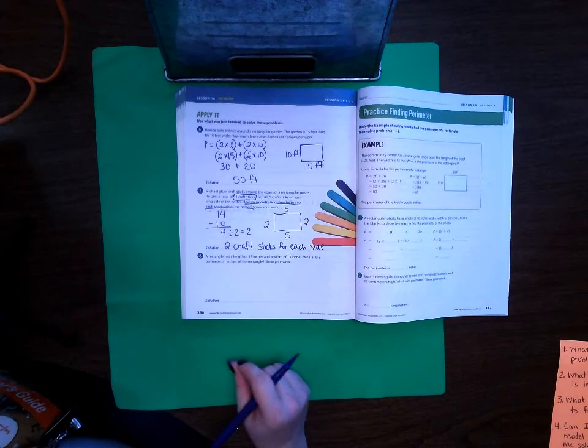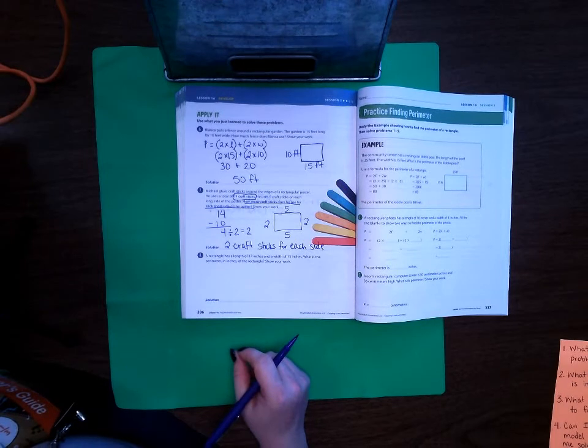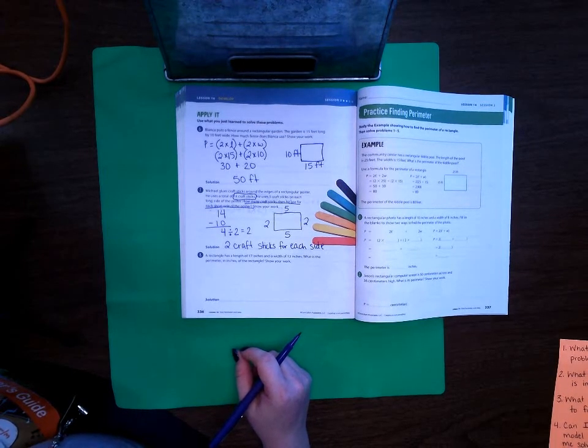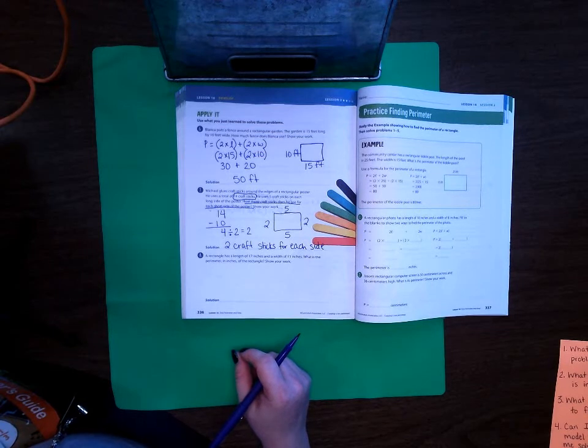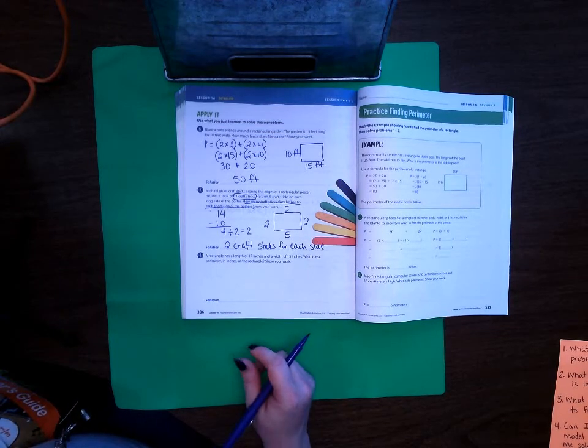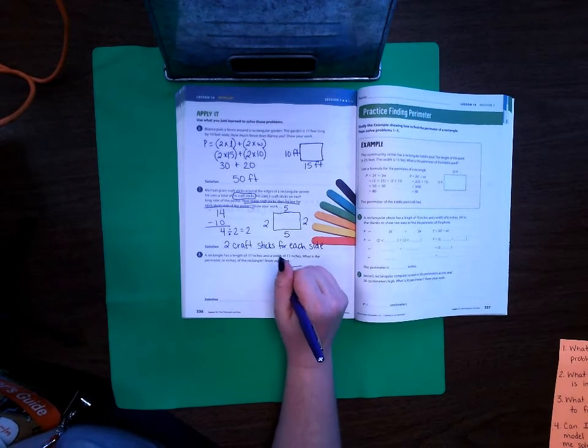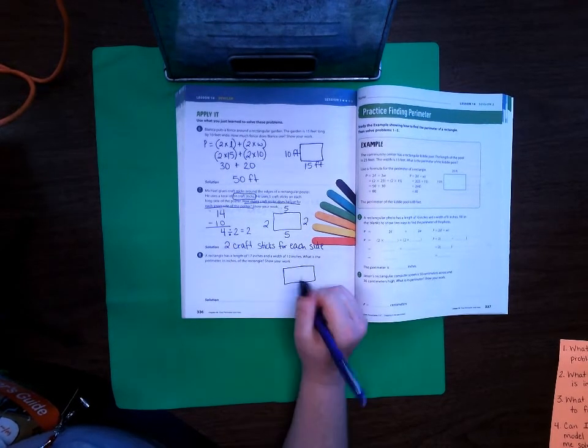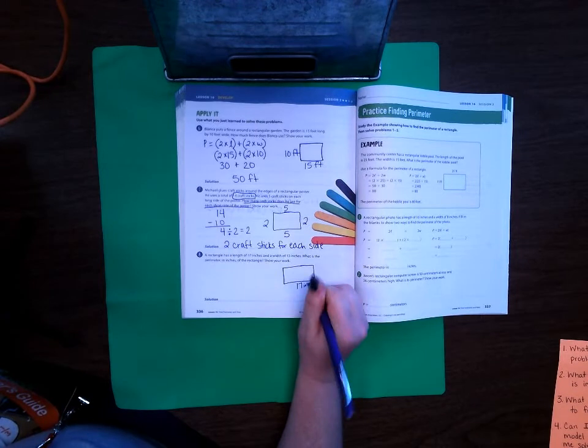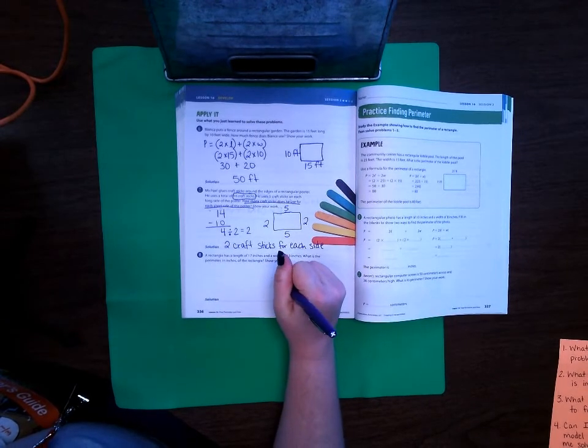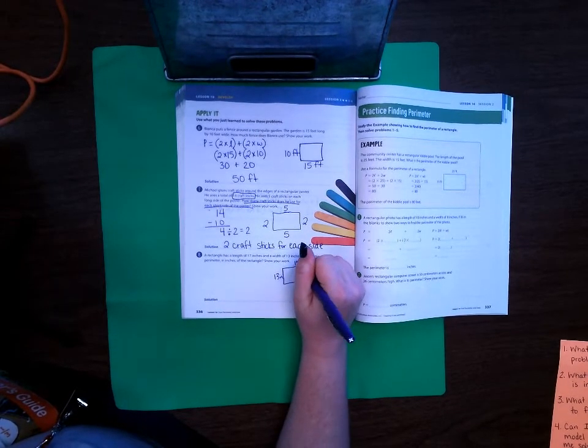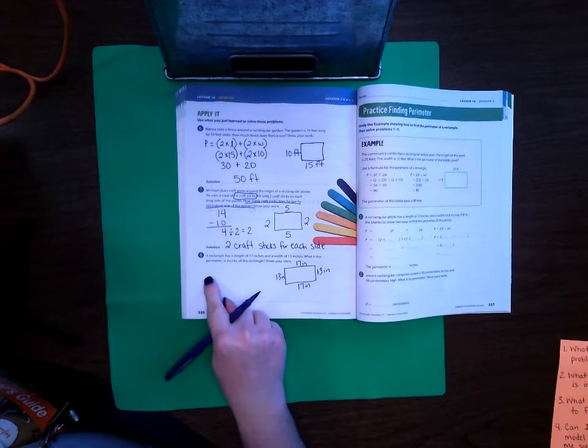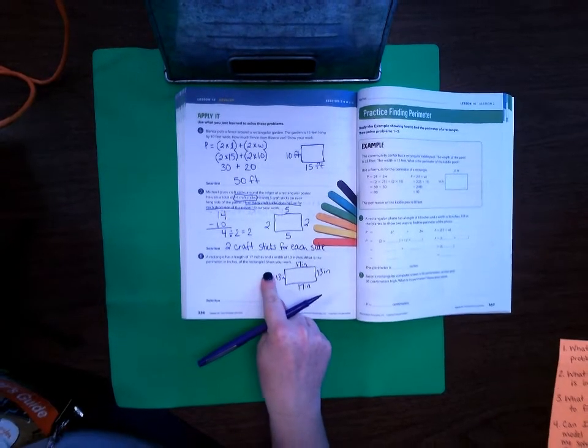Number 8 on page 336. A rectangle has a length of 17 inches and a width of 13 inches. What is the perimeter in inches of the rectangle? Show your work. Okay, so let's draw our rectangle. It has a length of 17 inches and a width of 13 inches. So if 17 is there, I know that 17 is here and 13 is here. But I'm going to use a formula to solve this.